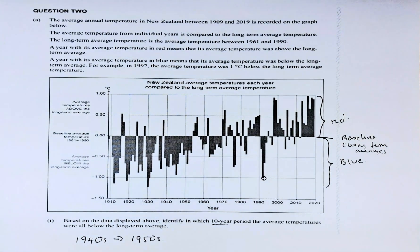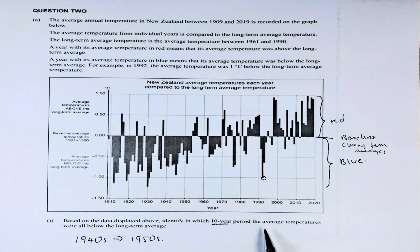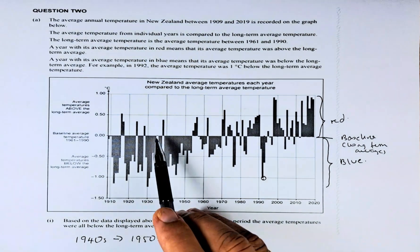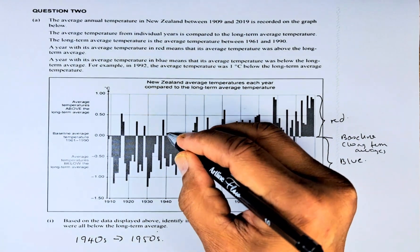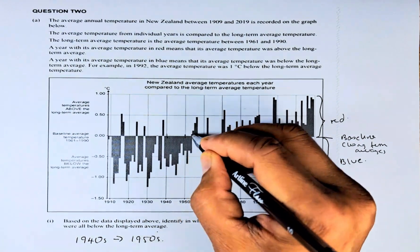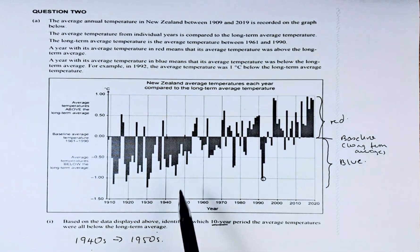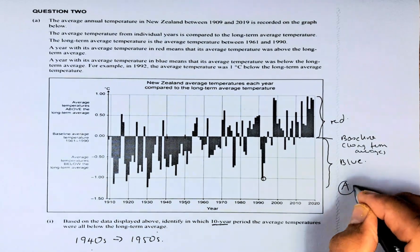So, let's read the question. Based on the data displayed above, identify which 10-year period the average temperatures were all below the long-term average. The long-term average is the baseline, so between the 1940s to 1950s, all of them are below the long-term average. You can answer that — that will be an achieve.